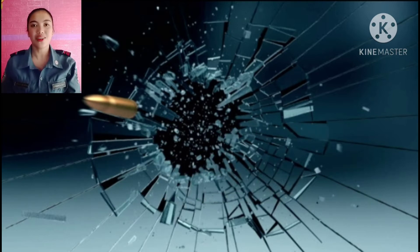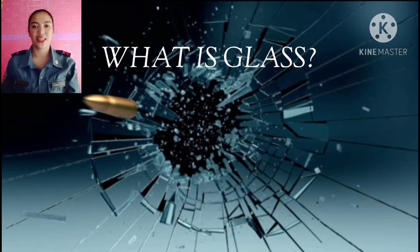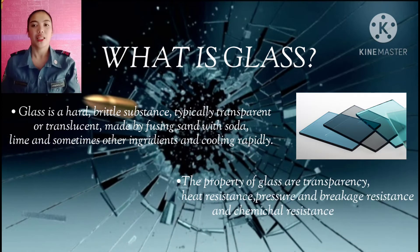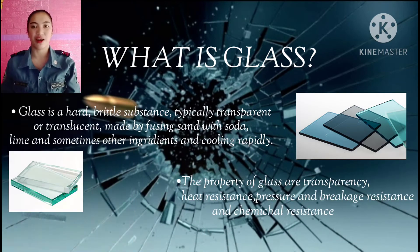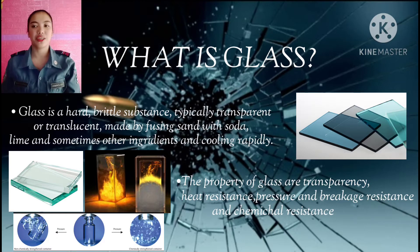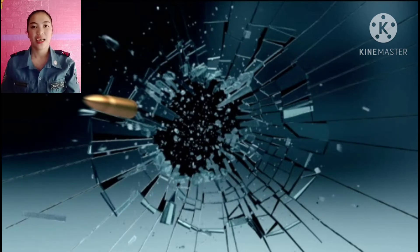Let's start with the question: what is glass? Basically, glass is a hard, brittle substance, typically transparent or translucent, made by fusing sand with soda, lime, and sometimes other ingredients, and cooling rapidly. The properties of glass are transparency, heat resistance, pressure and breakage resistance, and chemical resistance.